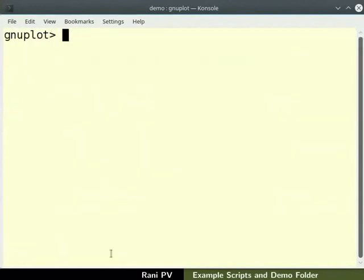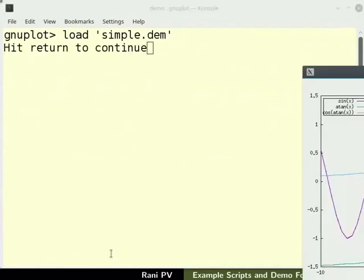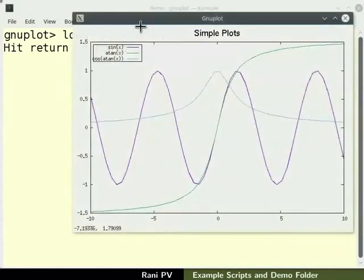I will clear the terminal. To load the script, type load space within single quotes simple.dem. A graphical window opens. Click on this graphics window to activate it. Three functions, sin x, a tan x and cos a tan x are plotted.